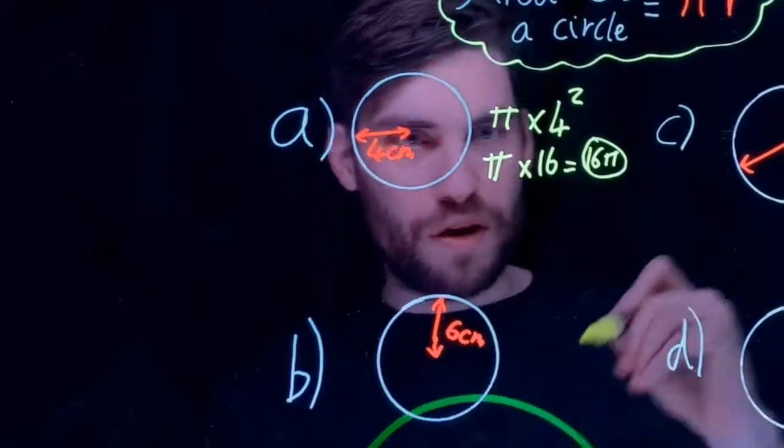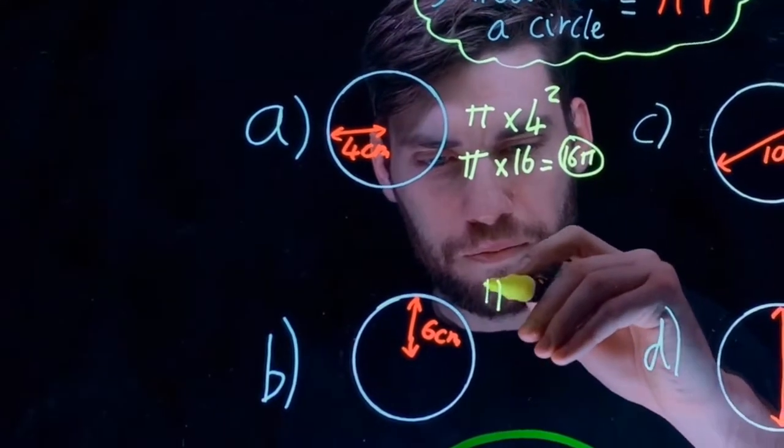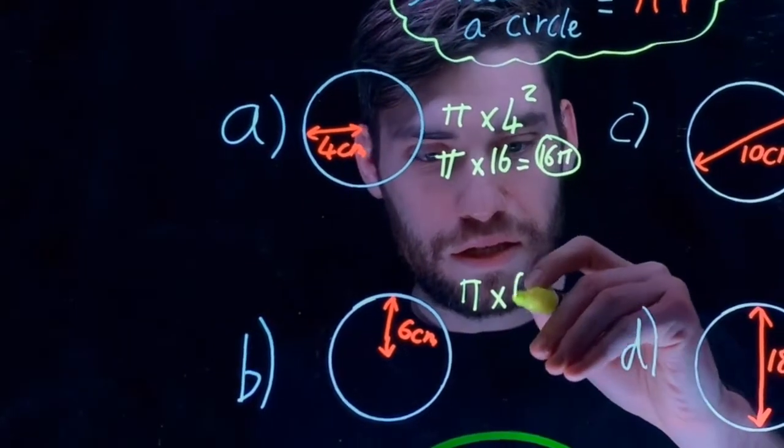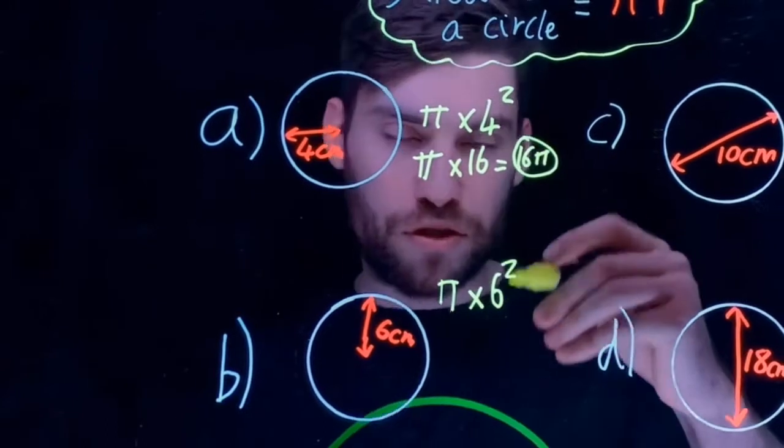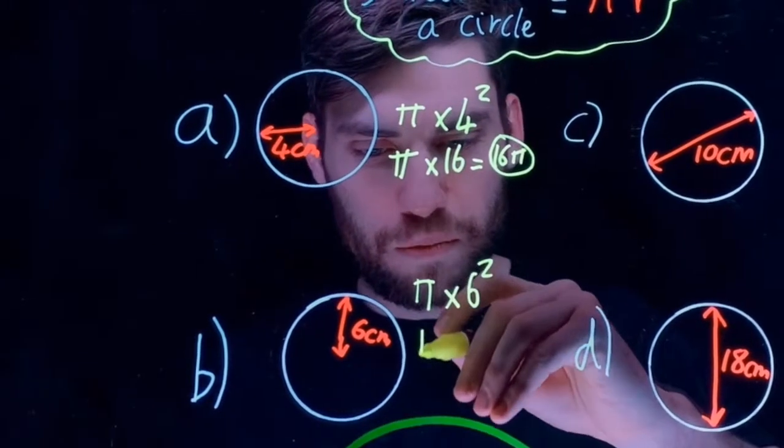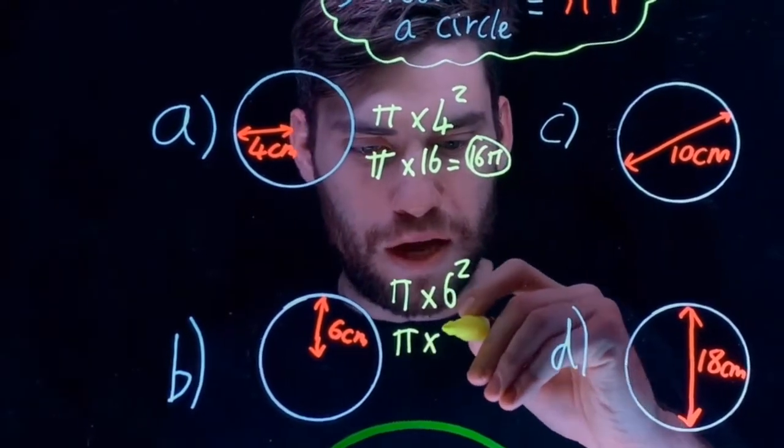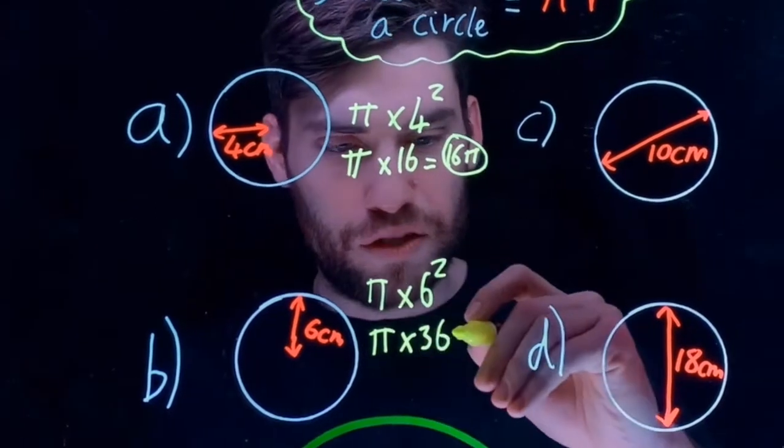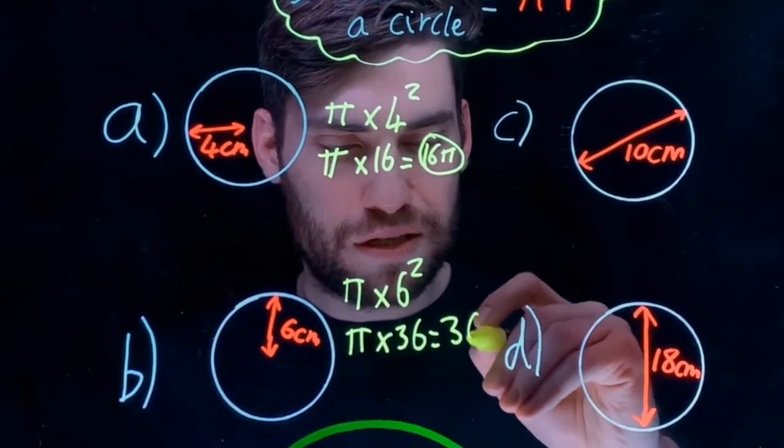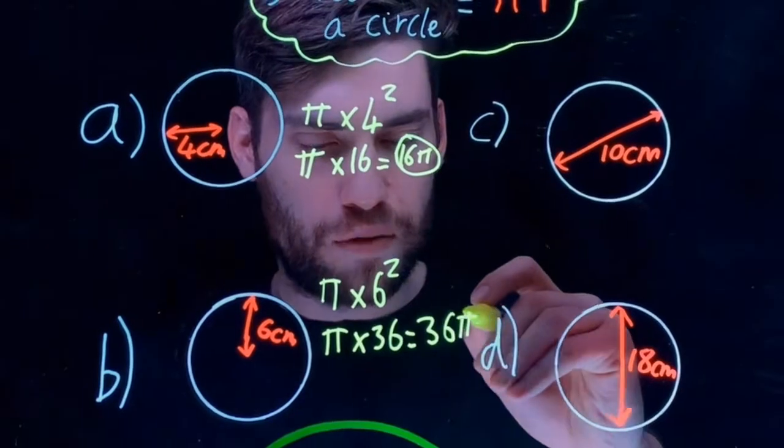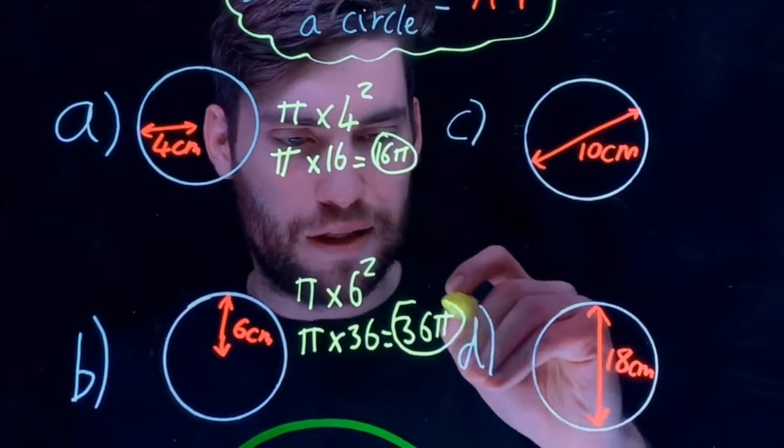Next one. Given the radius again, it's just π times 6 squared. Remember it's not 6 times 2, it's 6 times 6. So it'll be π multiplied by 36, which equals 36π as our answer. And that is it.